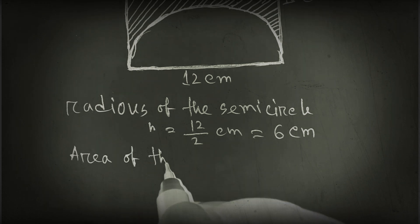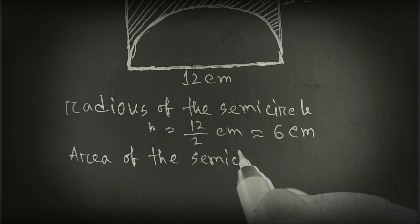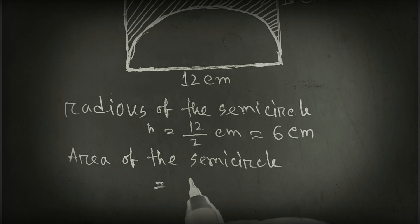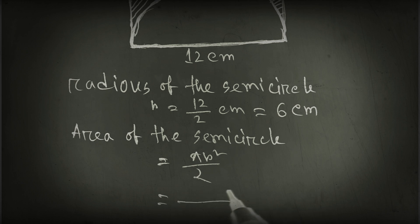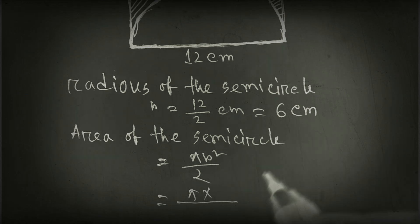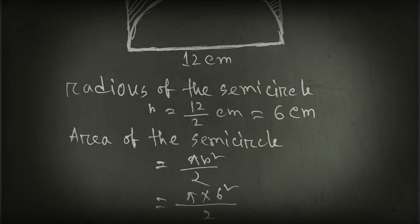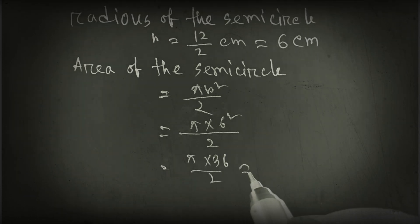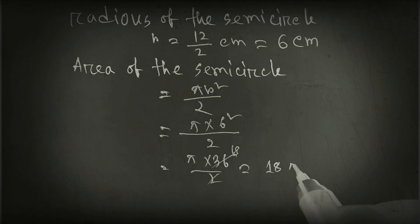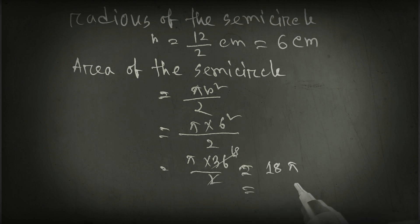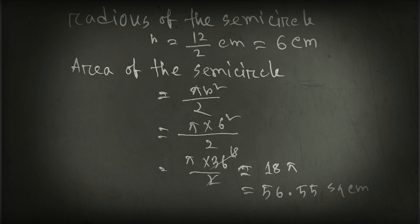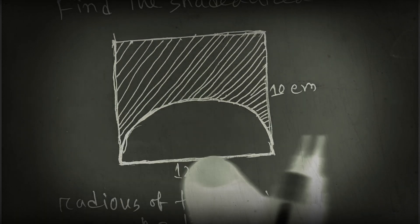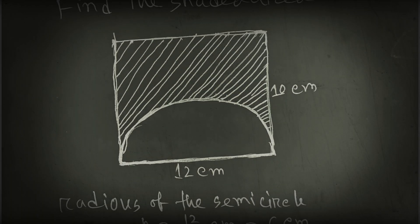Now we find the area of the semicircle. Area of semicircle equals πr²/2, so π multiplied by 6 squared divided by 2, that means π multiplied by 36 divided by 2, which equals 18π. Using a calculator, this answer will be 56.55 square cm.